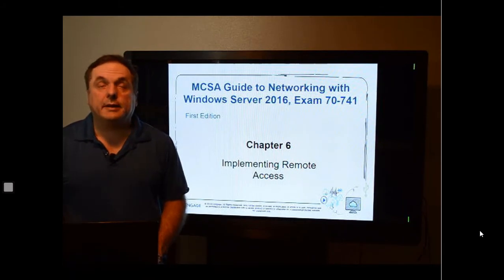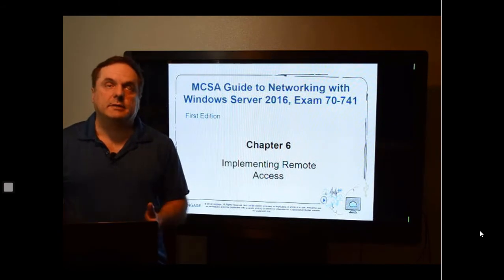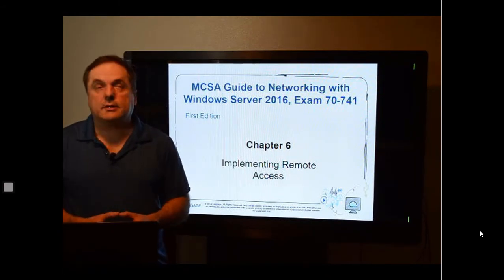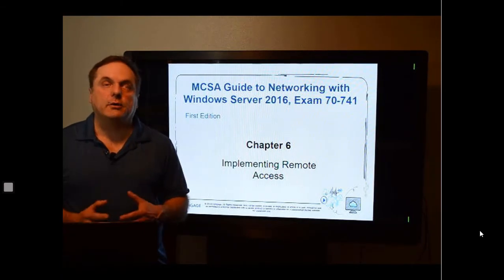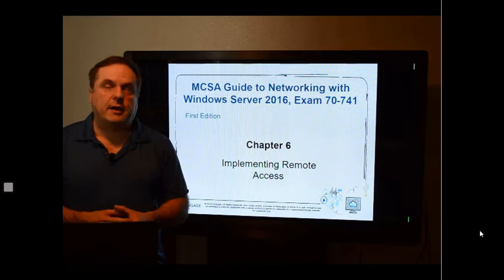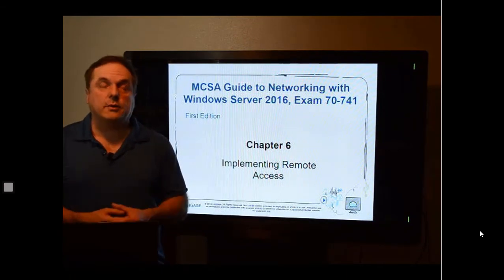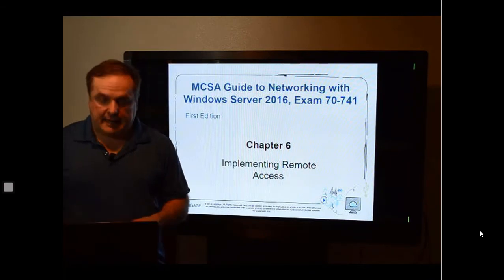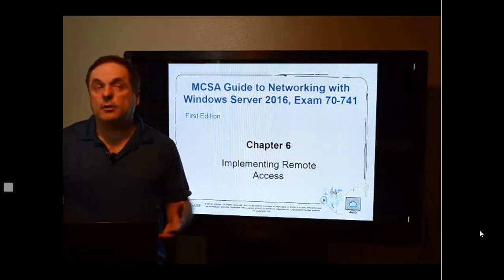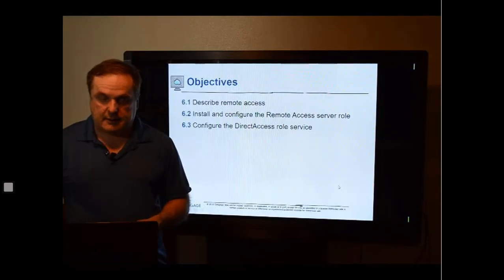Welcome to Module 6 in 288M. We're still in Chapter 6 — we split Chapter 6 into Modules 5 and 6 because it covers two very different types of technologies, and we did not want it to be overwhelming. In Module 5 we talked about routing and remote access as turning your Windows server into a router, and we also talked about Direct Access. Now we're going to talk about how to implement routing and remote access.